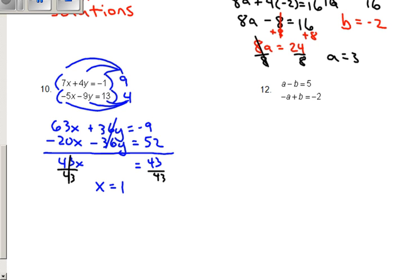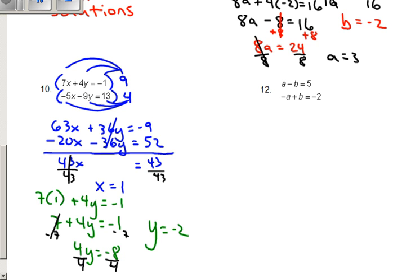Last step, as always, I'm going to take that x equals 1. I'm going to plug it in to the top equation. So 7 times 1 plus 4y equals negative 1. 7 plus 4y equals negative 1. I'm going to go ahead and subtract 7. 4y equals negative 8. Divide by 4. y equals negative 2. Final answer, we're going to write 1 negative 2. And there we go.